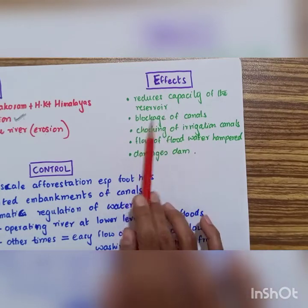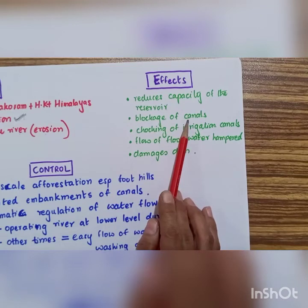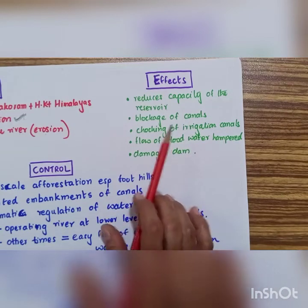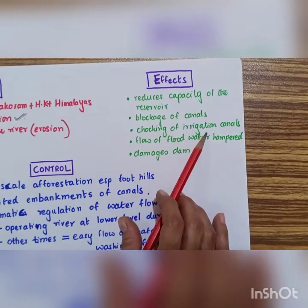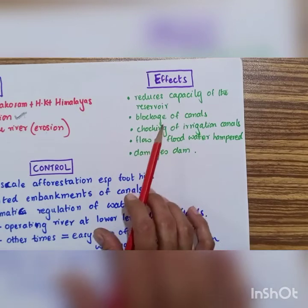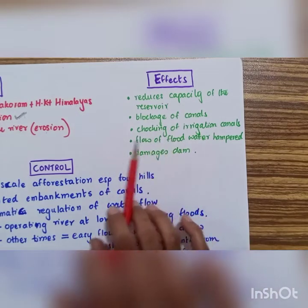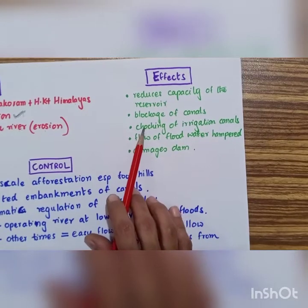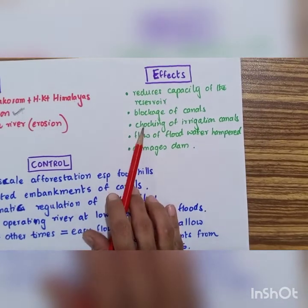Secondly, it leads to the blockage of the canals. That sand will get deposited in the canals and it will block them. Choking of the irrigation canals. Sometimes the irrigation canals get so much blocked that it results in complete choking and then the water cannot flow. As a result, this damages the flow of water to agricultural lands.